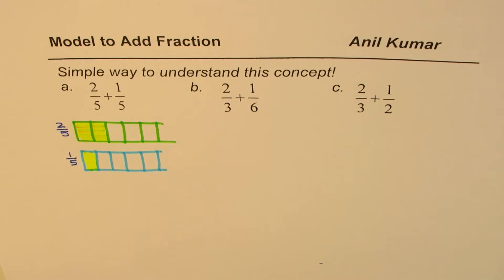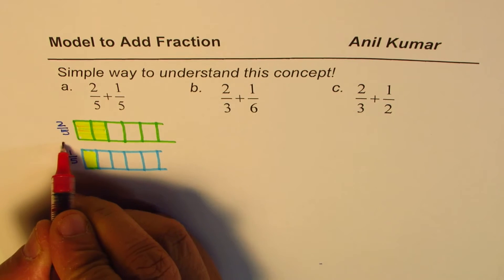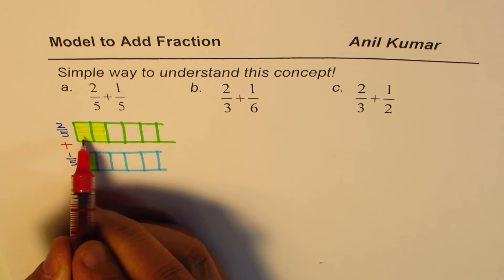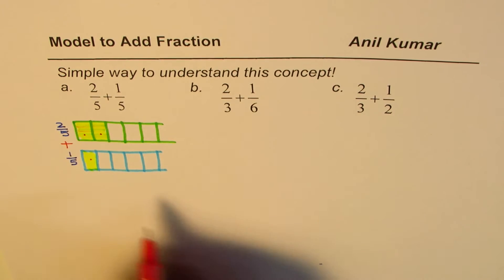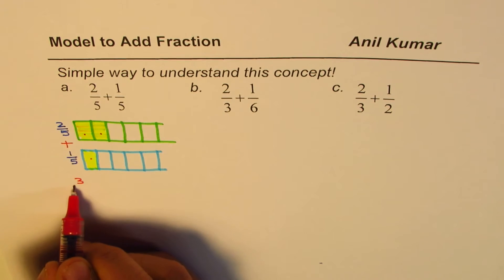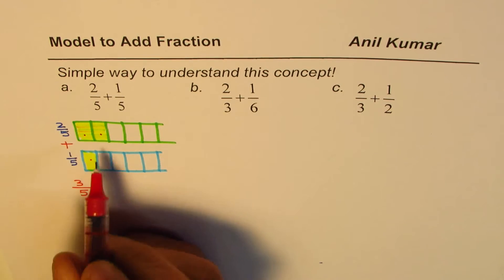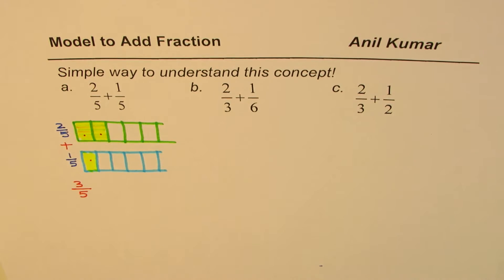Now what happens when you add them? When you add them you get 1 out of 5, 2 out of 5 and 3 out of 5. So what you get is 3 out of 5. Do you see that? You can visualize and see it. Now this was easy. We had the same denominator.